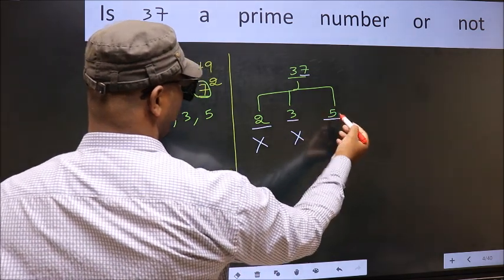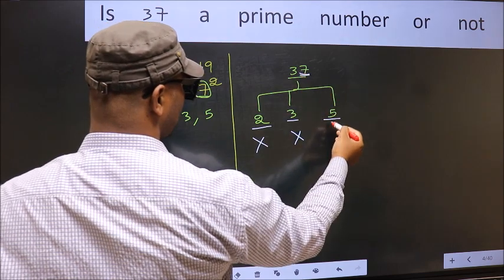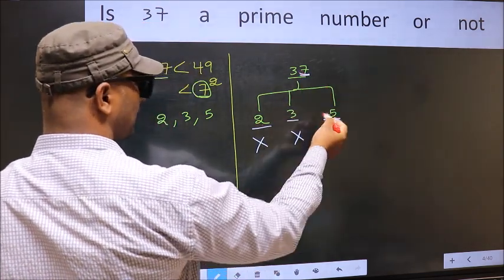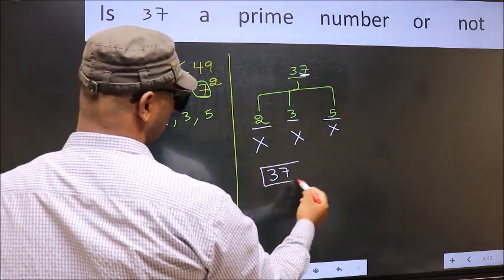Next number 5. Last digit is neither 0 nor 5, so this is not divisible by 5. So 37 is not divisible by any of these numbers. Therefore, 37 is a prime number.